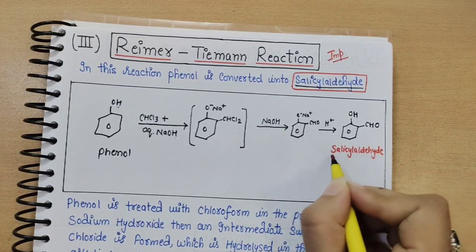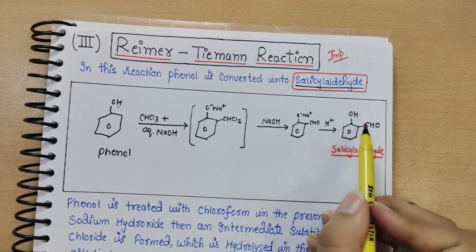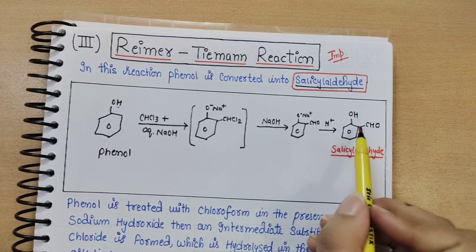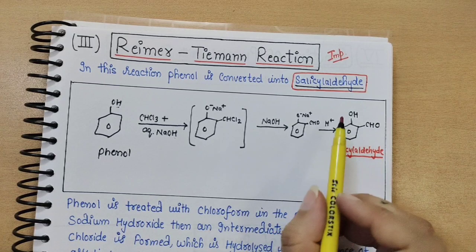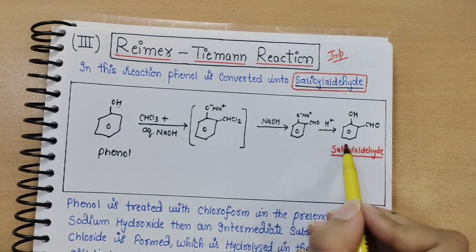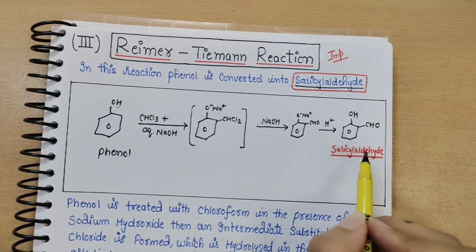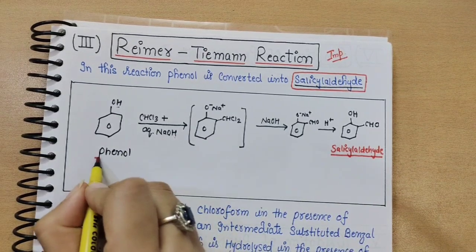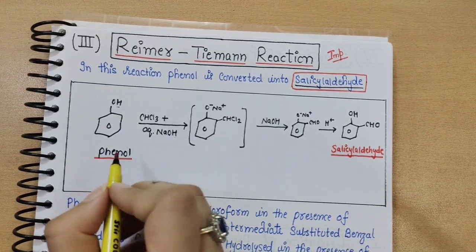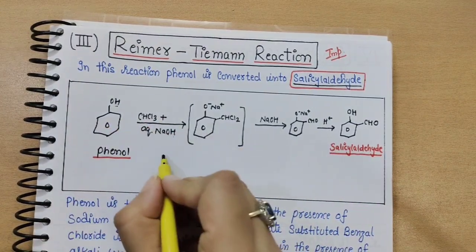For comparison, salicylic acid from the Kolbe reaction has a COOH group at the ortho position, whereas salicylaldehyde from the Reimer-Tiemann reaction has a CHO group. These are similar products from phenol — one has COOH, the other CHO. This is an elaborated reaction, but it can also be written in short.